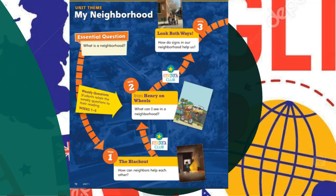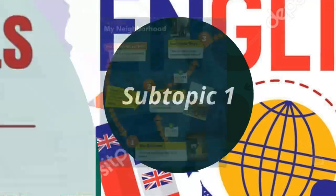In week two we will read from 'Henry on Wheels' — what can I see in the neighborhood? In week three it's an informational text, so we're going to learn about road signs and how we can be safe. The essential question is: how do signs in our neighborhood help us?